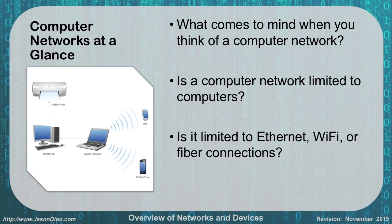It's a personal area network, which is a very small network. Bluetooth would be the same thing — it's also a personal area network. Here we have a laptop computer connecting wirelessly with a PDA or a mobile phone. That could be using something like infrared technology, which would also be a computer network — a personal area network or wireless network, which could be a LAN or a personal area network.